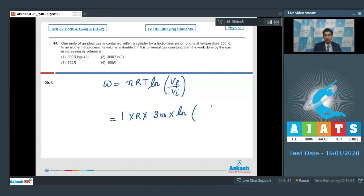Now, since the volume is double, the ratio of final to initial volume will be 2. So this will be equal to 300 R ln 2, which makes option number 2 as the correct answer.